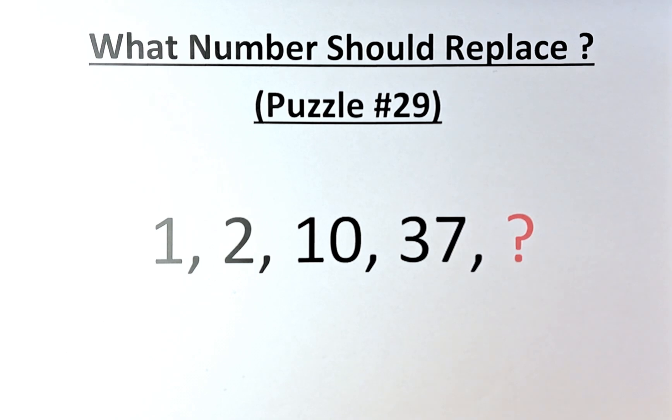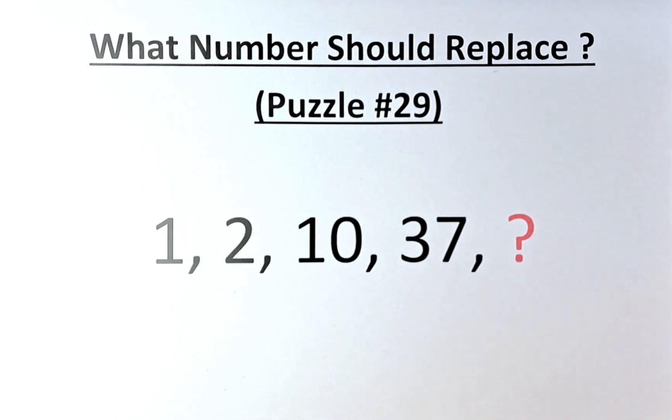Welcome back to the solution of puzzle number 29. The numbers in the puzzle are as follows: it starts with 1 followed by 2, 10, 37 and a question mark. Have you found the solution to this puzzle? If not, I'll give you the solution right now.